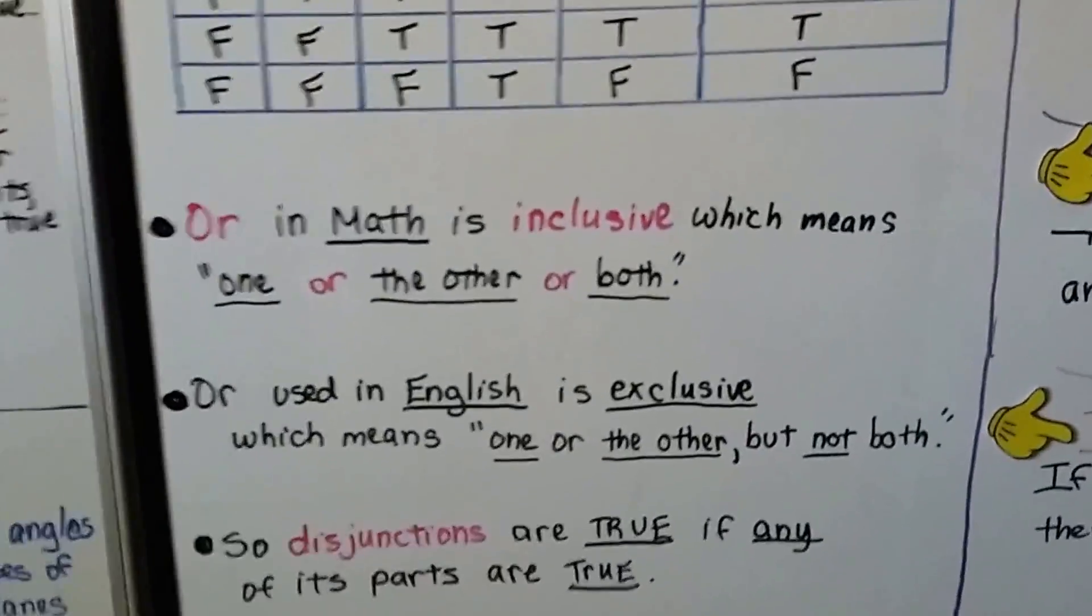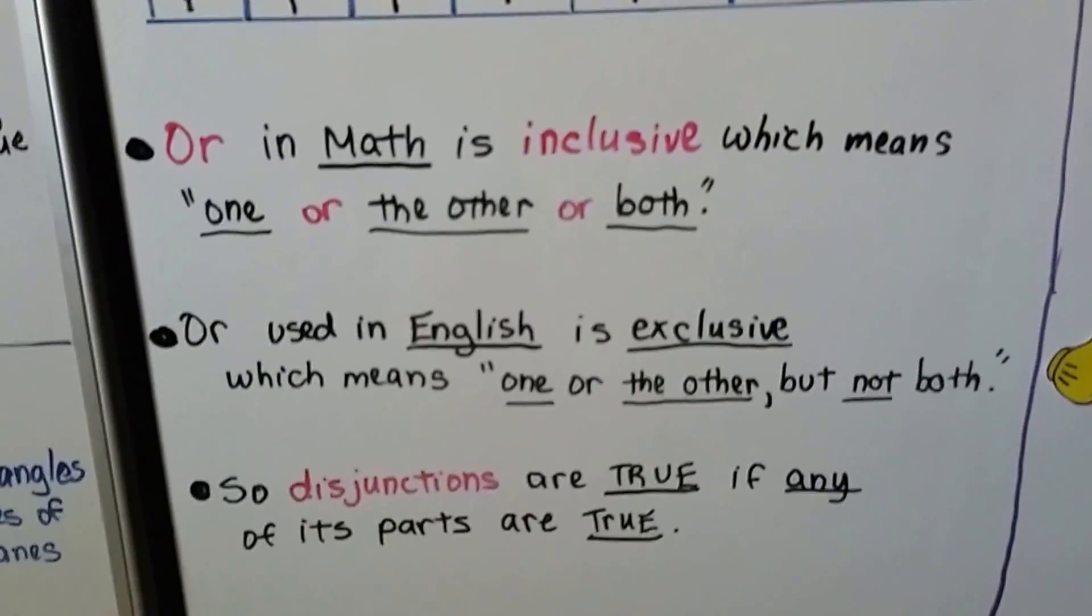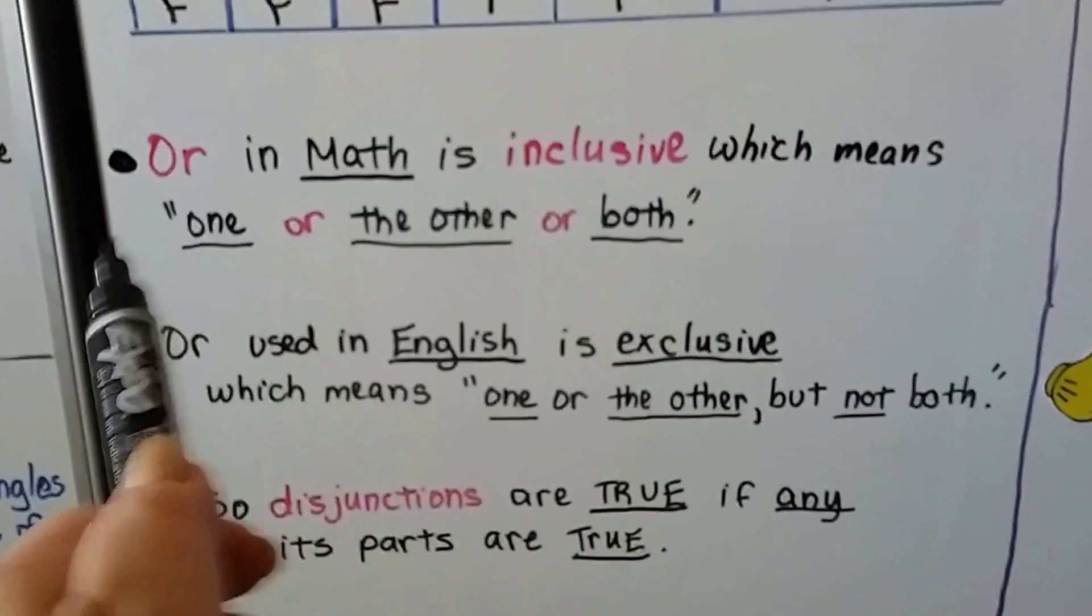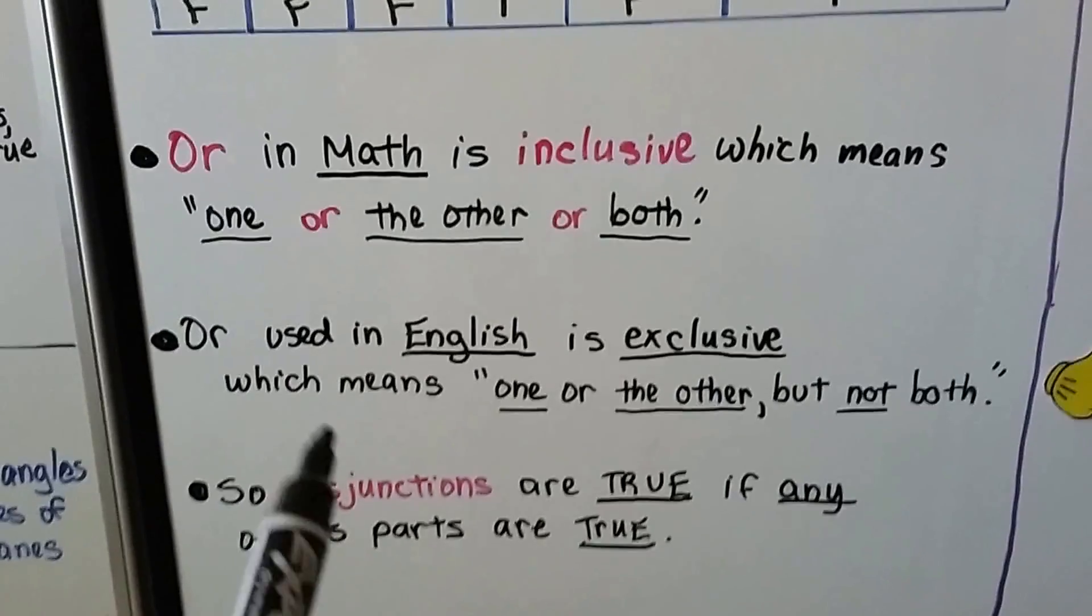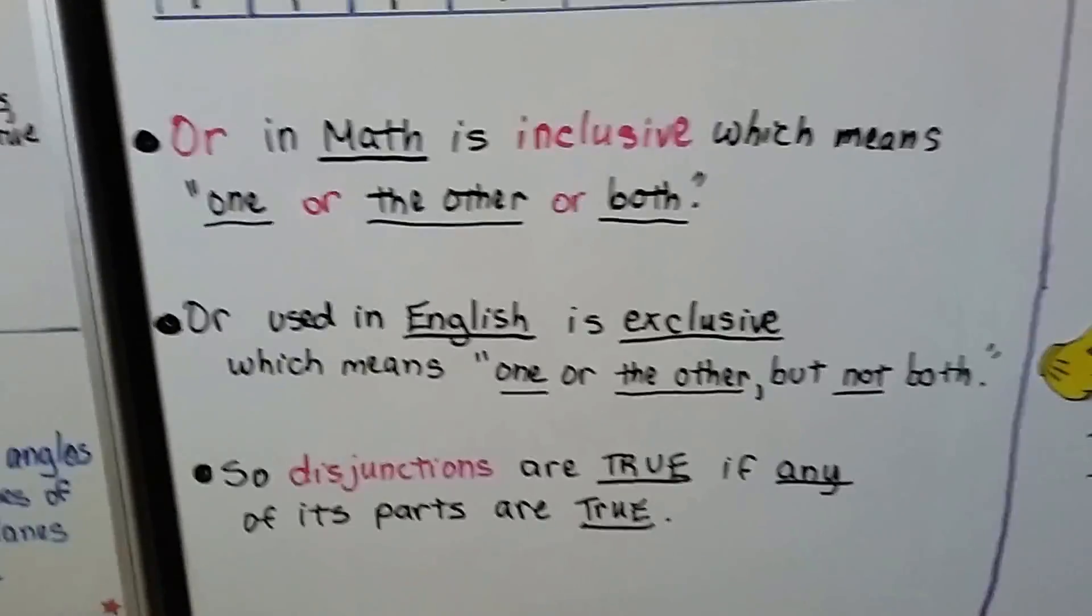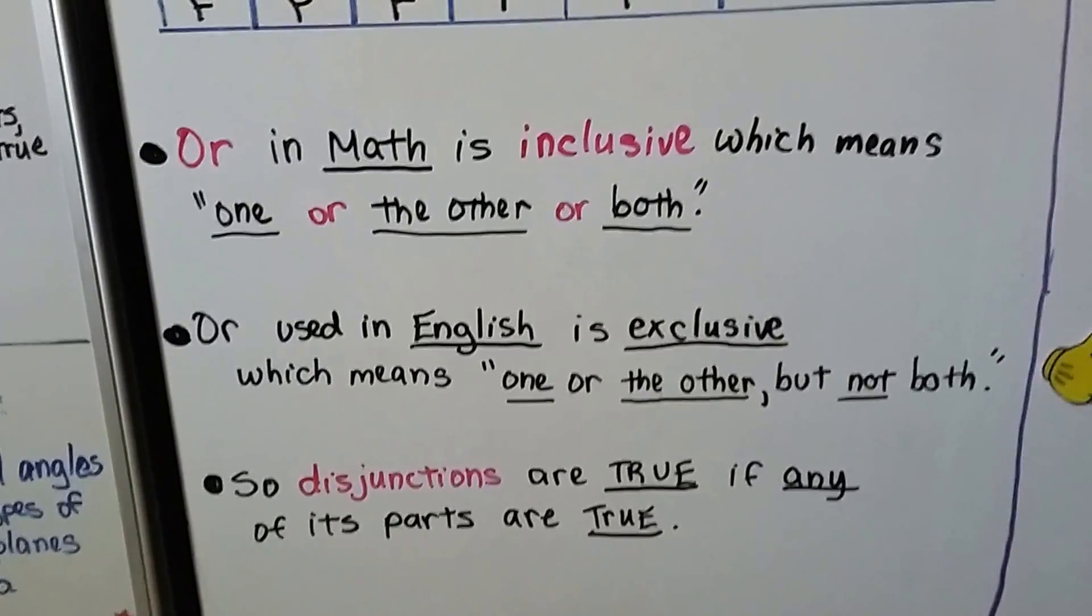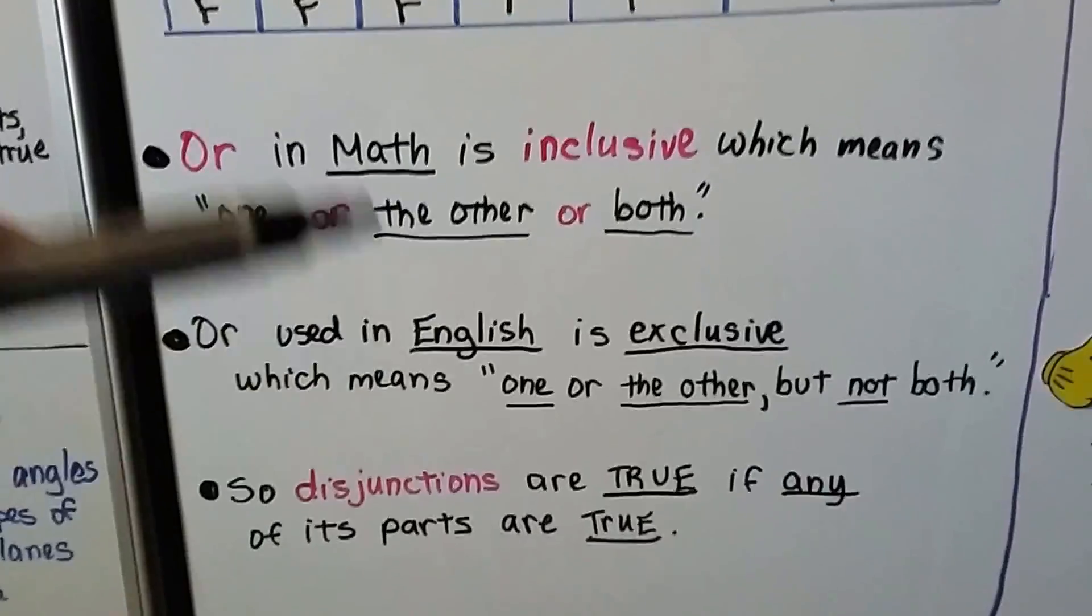So or in math is inclusive, which means one or the other or both. It could be either. But when we use it in English, it's exclusive, which means one or the other, but not both. So it's going to be a little different.